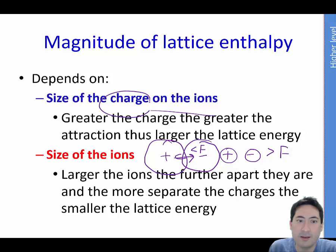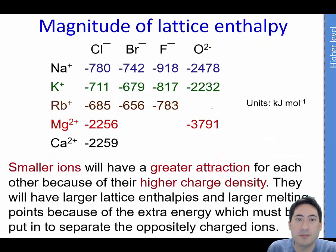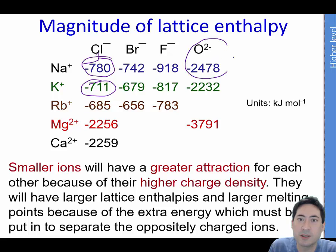So charge and size of the ions to do with distance. So here are some examples. You can see sodium here is much smaller. So that's much bigger than this potassium one here. And the bond formed with oxygen is much greater because it's got a negative 2 charge.